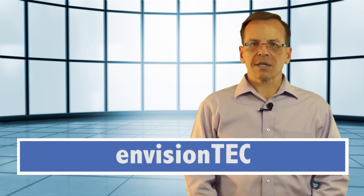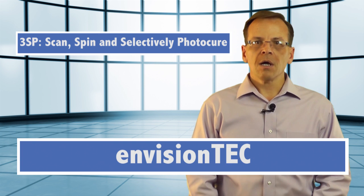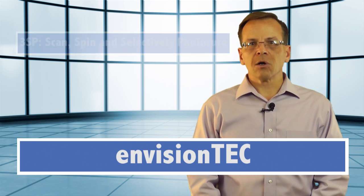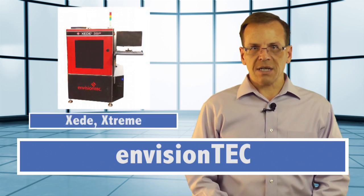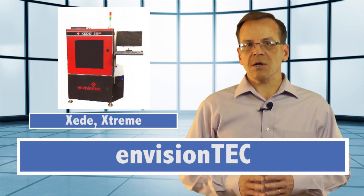Mid-2013, EnvisionTech introduced a new technology that it calls 3SP, which stands for Scan, Spin, and Selectively PhotoCure. Most recently incorporated 3SP in its large frame 3D printers, the XSEDE and the XL-SEDE. 3SP is a big departure from EnvisionTech, which has built its business on DLP-based 3D printers.